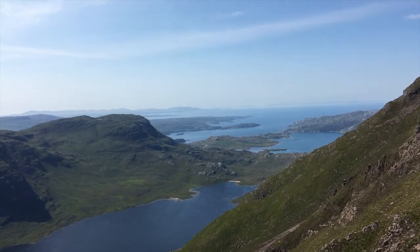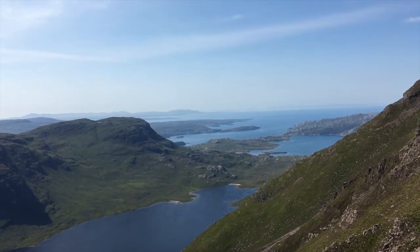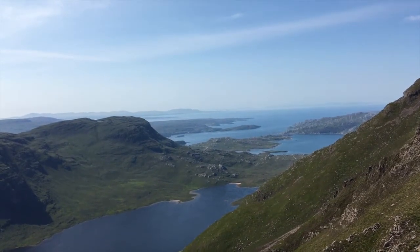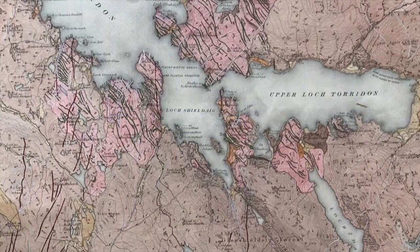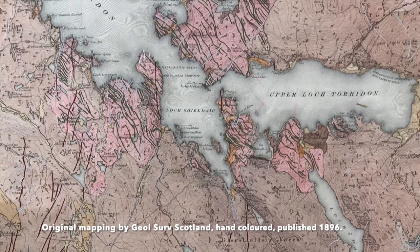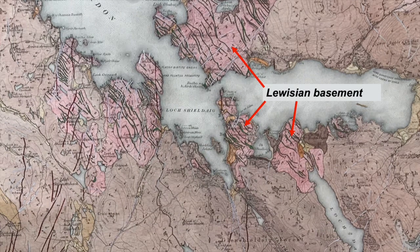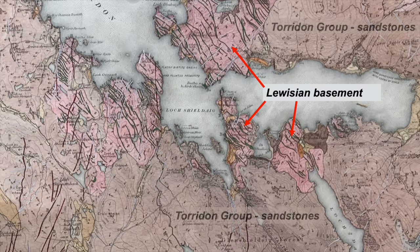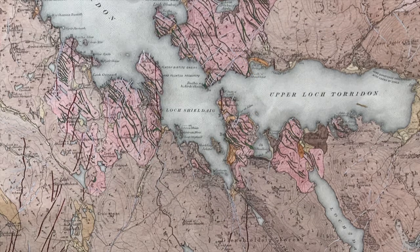The north-west of Scotland around Torridon is home to the oldest rocks in the British Isles. These include ancient crust — the basement — the Lewisian complex, and on top the Torridon Group sandstones, a sedimentary cover deposited in the Proterozoic era, that's a billion years ago.